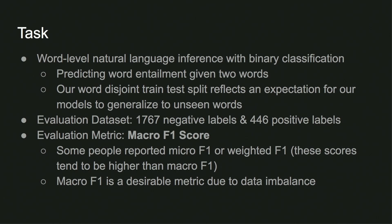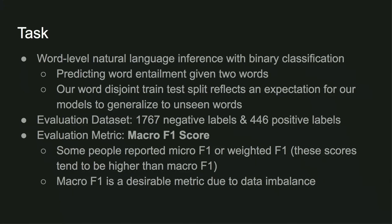Our evaluation dataset consisted of 1767 negative labels and 446 positive labels, which is a pretty unbalanced dataset. Our evaluation metric was Macro F1 score. Some people reported their Micro F1 or Weighted F1, but we only looked at the Macro F1. The Micro F1 and Weighted F1 were a bit higher than the Macro F1. Macro F1 is a desirable metric because of data imbalance.